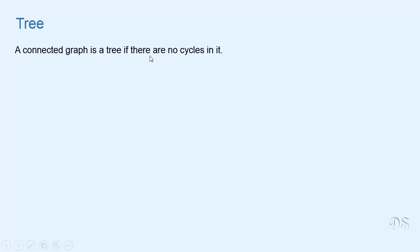A connected graph is a tree if there are no cycles in it. So we can say that a tree is an acyclic connected graph.